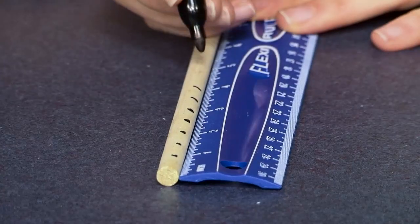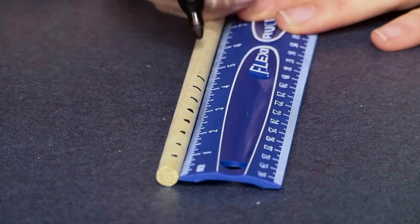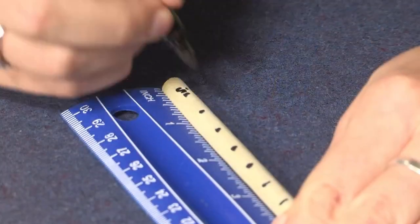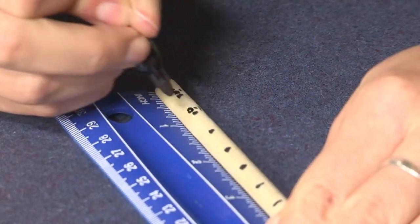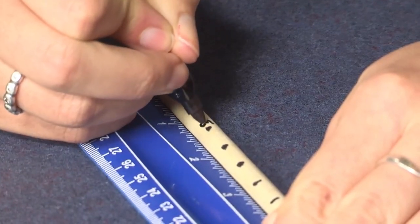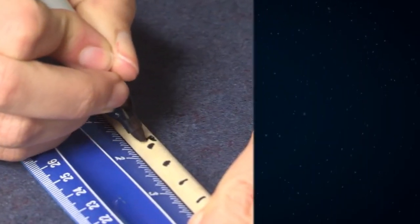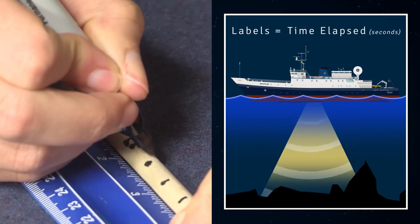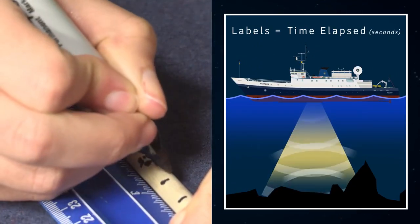Cut the wooden dowels used as the sonar pings to measure time to a length just taller than seafloor boxes. Measure and mark every half inch on the dowel with a sharpie. Label the marks as half decimal points starting nearest to the handle with .5, 1.0, 1.5, and so forth. Labels represent time elapsed in seconds for a sonar ping to travel ship to seafloor to ship.